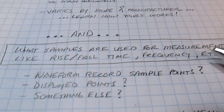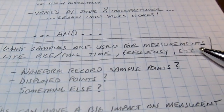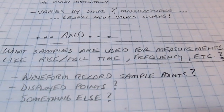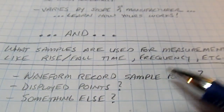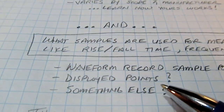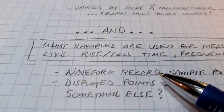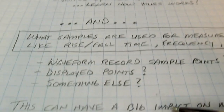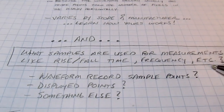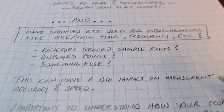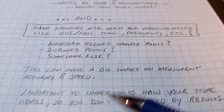The other important question is which sample points are used for measurements like rise time, fall time, or frequency — is it the full waveform record in memory, or just the displayed points on screen, or something in between? If the manufacturer takes a subset of the waveform record to process for the screen and makes measurements on those, you can have accuracy issues. It's very important to understand how your scope processes data from the waveform record to measurements.